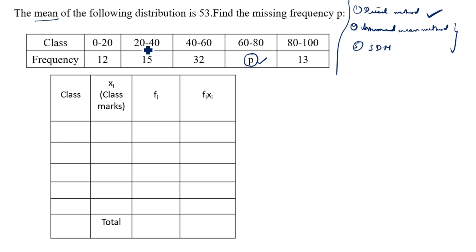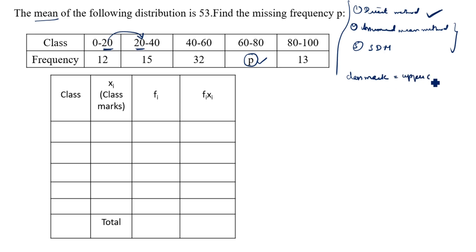The classes 0–20, 20–40, 40–60, 60–80, 80–100 are given. Check these steps carefully in your exam. The class mark formula is: class mark = (upper class limit + lower class limit) / 2.